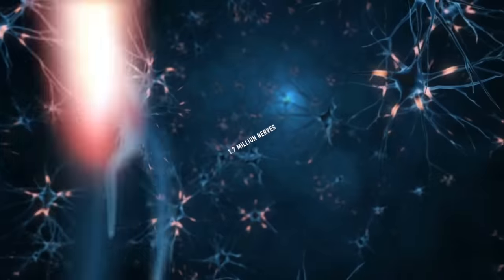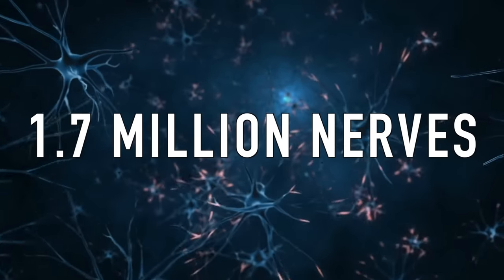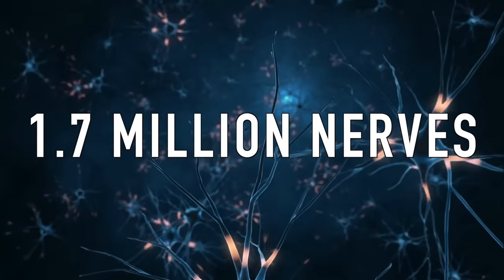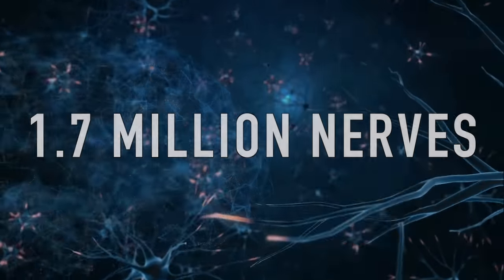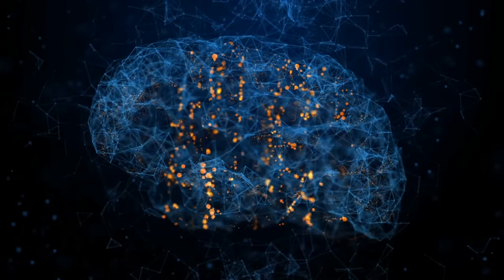By the way, the optic nerve has like 1.7 million nerves traveling through it, which carries a crazy amount of information into your brain.